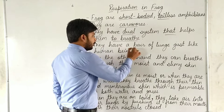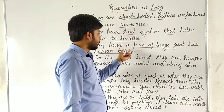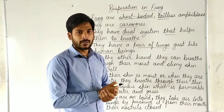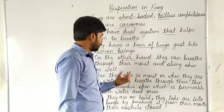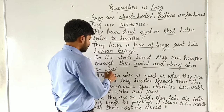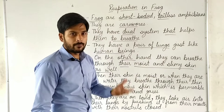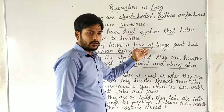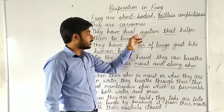They have a pair of lungs just like human beings — that is the first system. On the other hand, they can also breathe through their moist and slimy skin. So the first system is lungs and the second is skin — this dual system is what helps them to breathe.